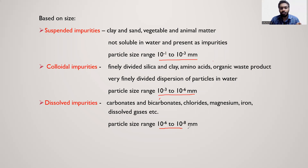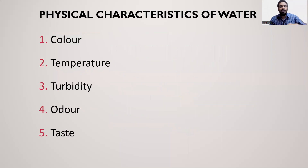Dissolved impurities have a particle size less than 10⁻⁸ mm. To summarize: impurities are classified as suspended, colloidal, and dissolved. We are going to discuss dissolved impurities further.